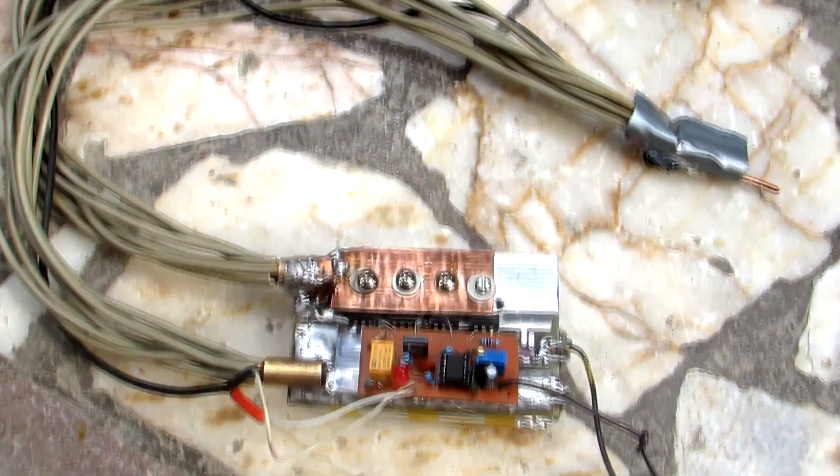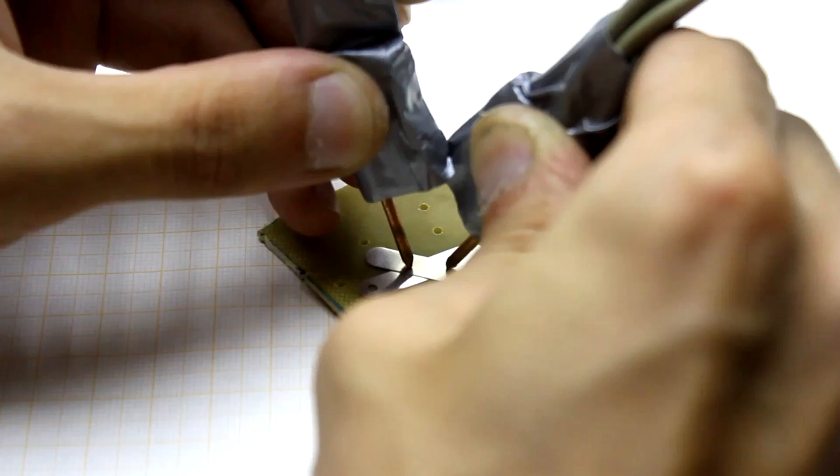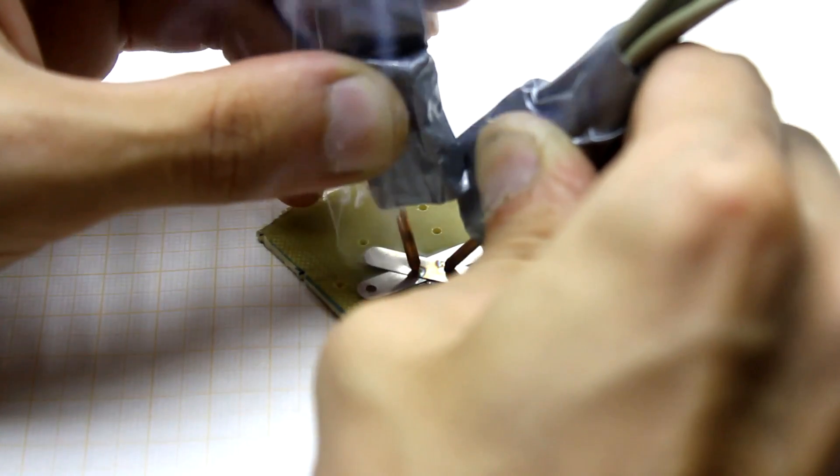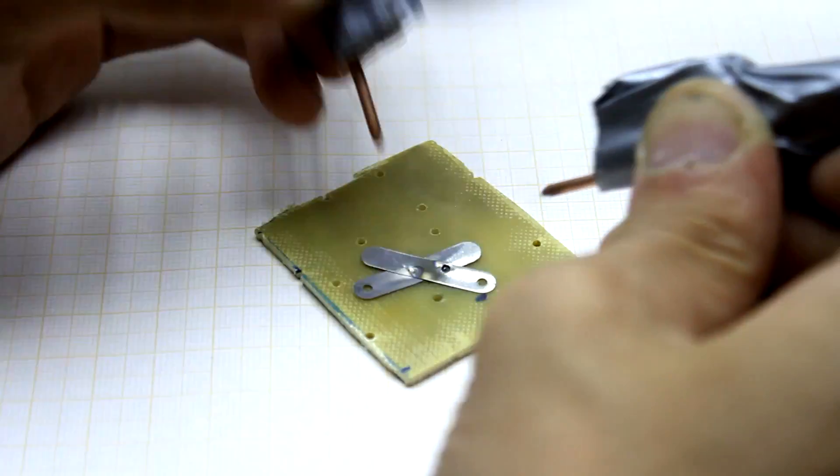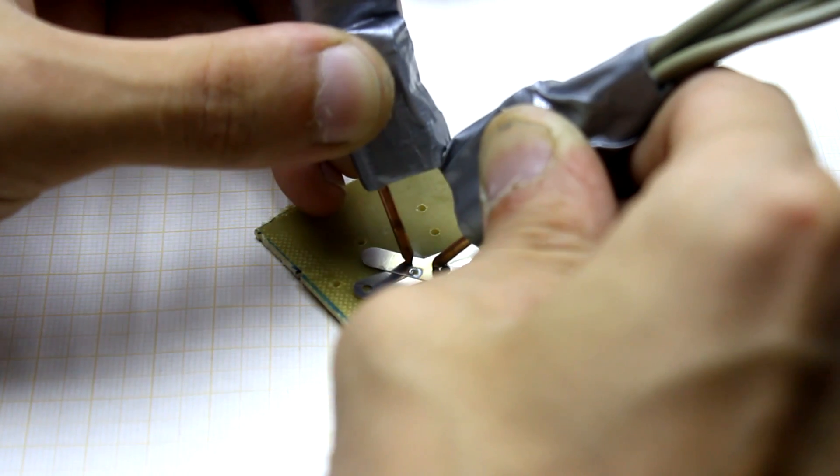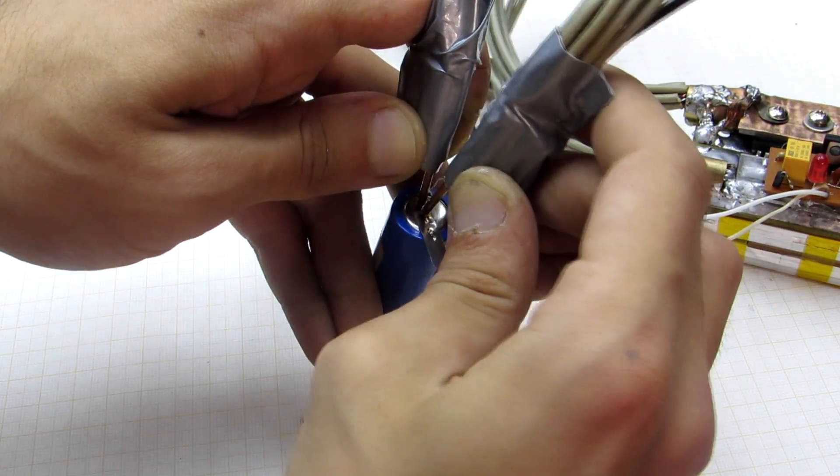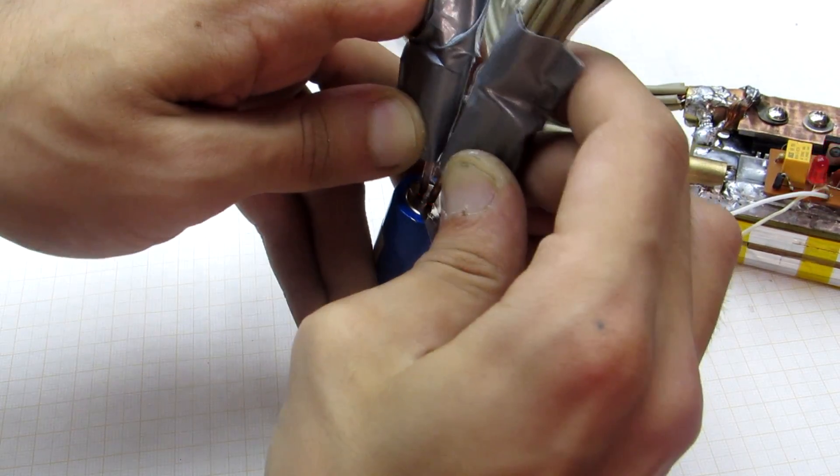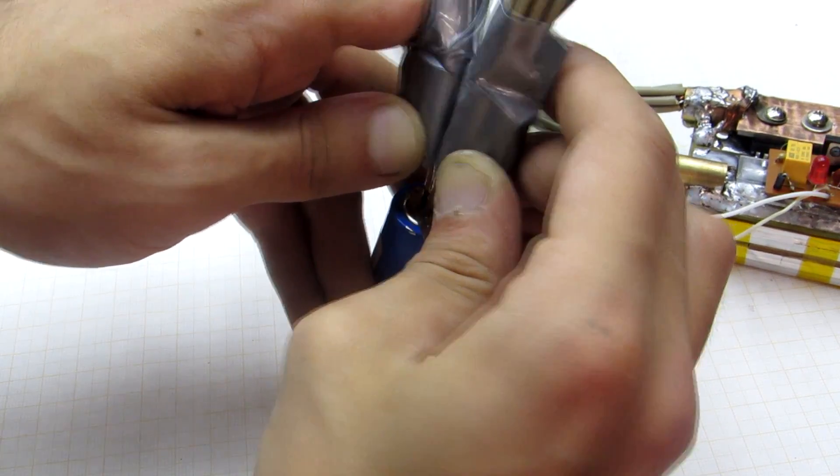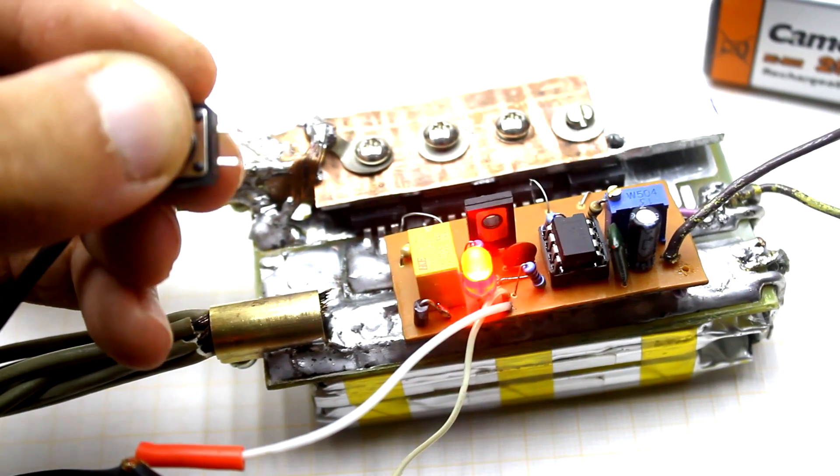But this version has almost all the features of industrial welding machines and is a pocket option. The operating principle is radically different from the first version. After the publication of the first version, I was asked to make some improvements. Since then I have already developed three versions of such devices. All three options were able to adjust the welding time and were autonomous.